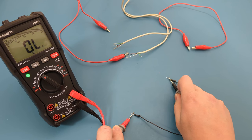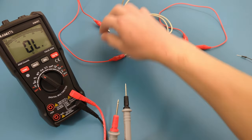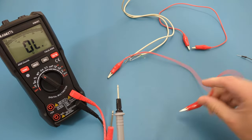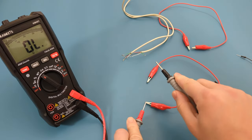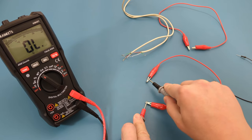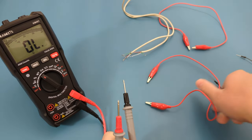Since we hear a beep, there is continuity and the wire is still good. Now let's check the red alligator clip. Like the black alligator wire, touch the probe leads to each end of the clip. Once again we hear a beep.